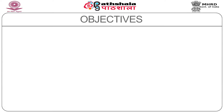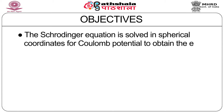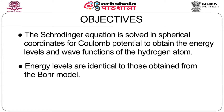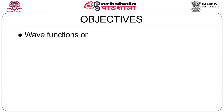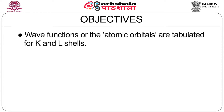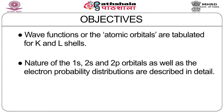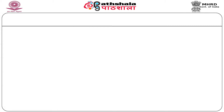Let us now tell you about the objectives of this lecture. The Schrödinger equation is solved in spherical coordinates for Coulomb potential to obtain the energy levels and wave functions of the hydrogen atom. Energy levels are identical to those obtained from the Bohr model. Wave functions, or the atomic orbitals, are tabulated for K and L shells. The nature of the 1s, 2s, and 2p orbitals, as well as the electron probability distributions, are described in detail. First of all, let me talk about the Coulomb potential, which can be described as a Coulomb well.